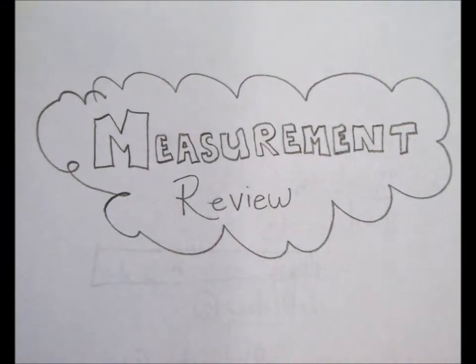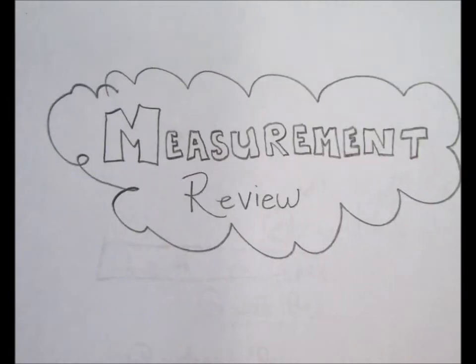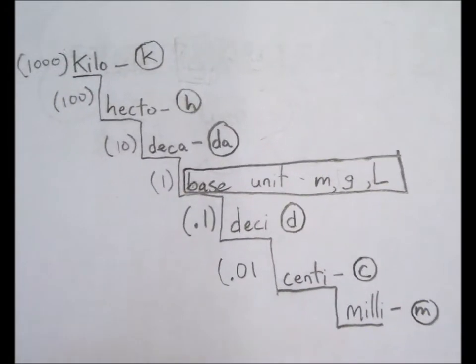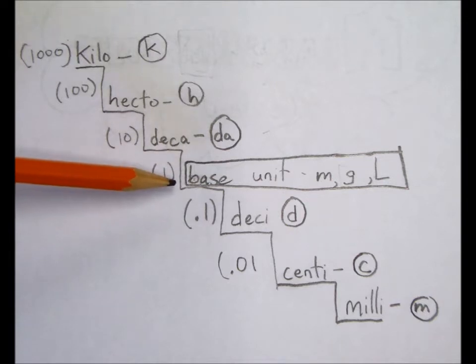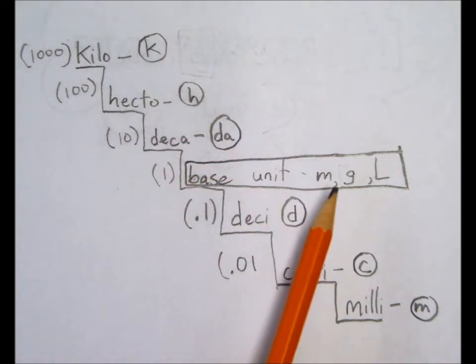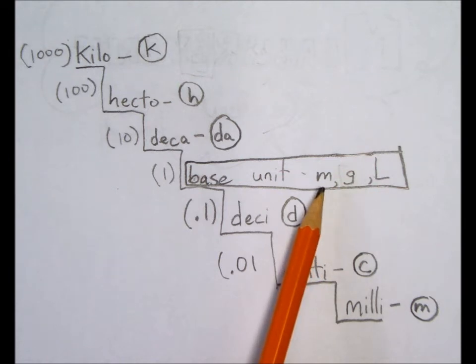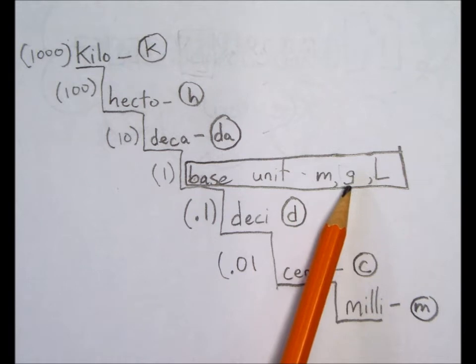So what I'm going to do is just get started on metric conversions. Here we have our conversion staircase and it's a good way of thinking about conversions if you need to do them. The most important part is right here, which is our base unit, and that tells us what exactly we're measuring. Meters is for things like length, area, volume. Grams is for mass, liters is for volume.